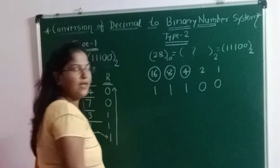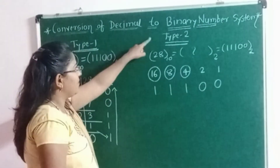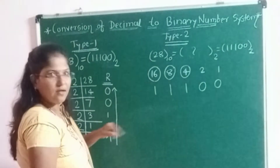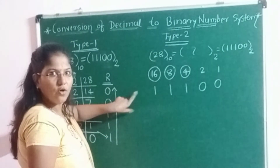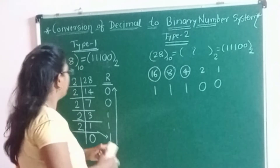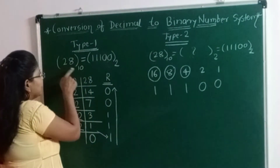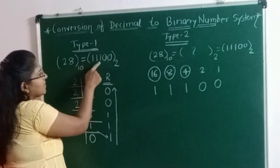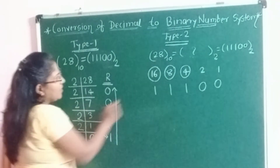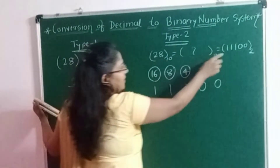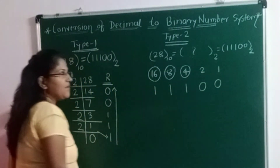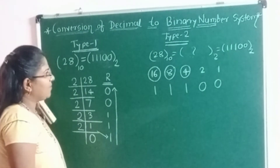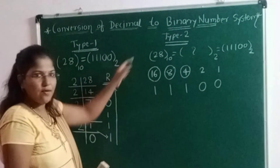Now we will verify whether we are getting the correct result in both types. In Type 1 the decimal number 28 gave a binary equivalent of 11100. Here in Type 2 we are also getting 11100. That means our result is correct. Now let me take one more example for Type 2.